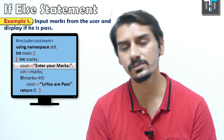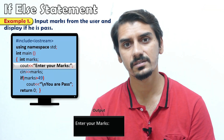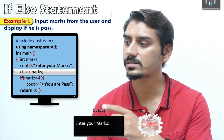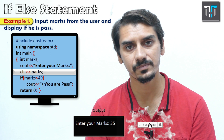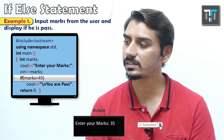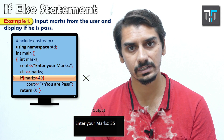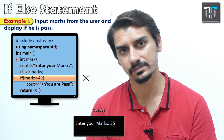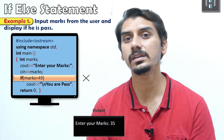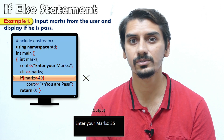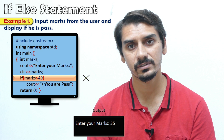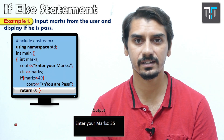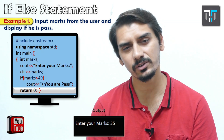Now suppose the user enters 35 marks. The value 35 is assigned to the variable marks. The condition is checked: 35 is greater than 49 — the condition is false. So the body of the if will not be executed and we are not displaying anything.